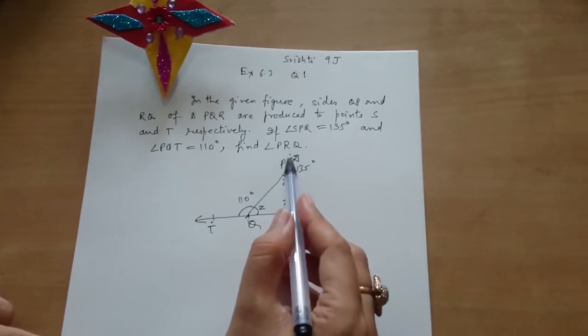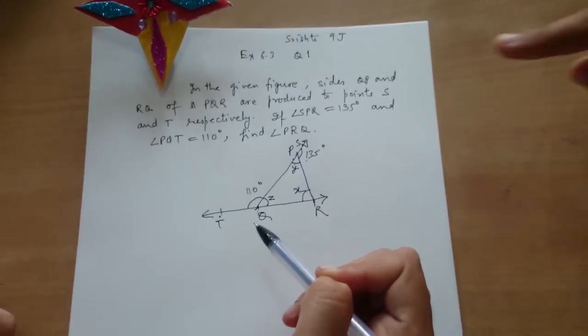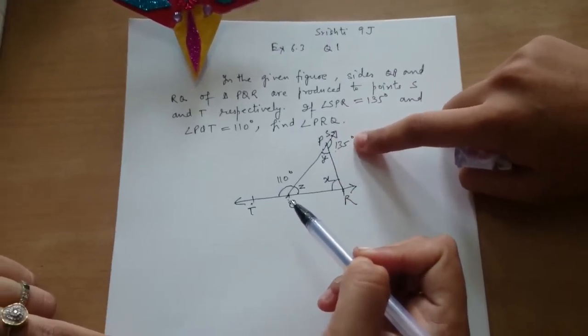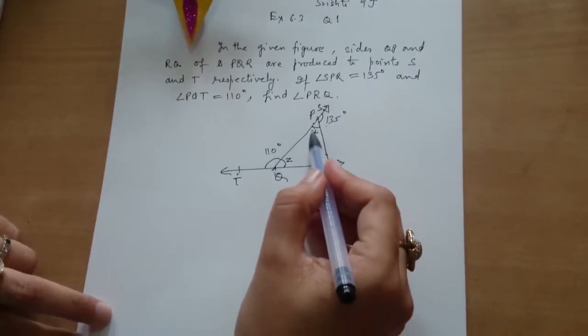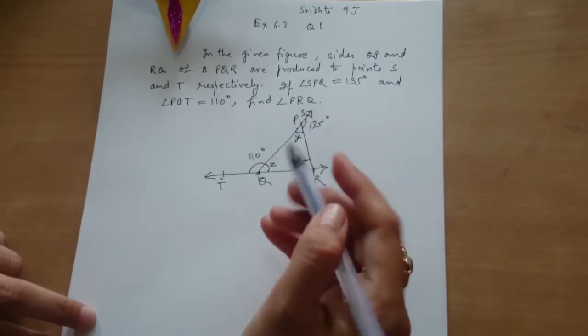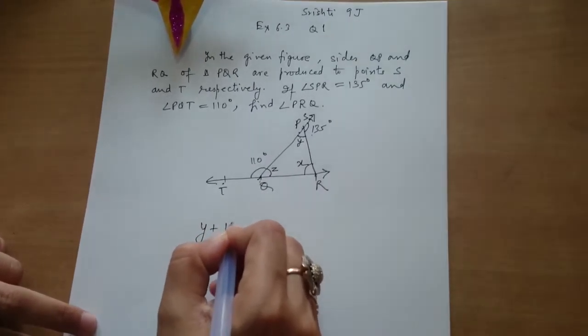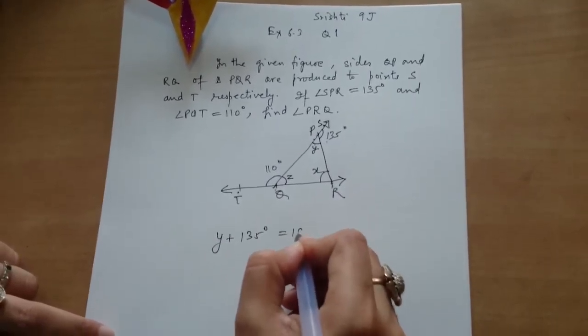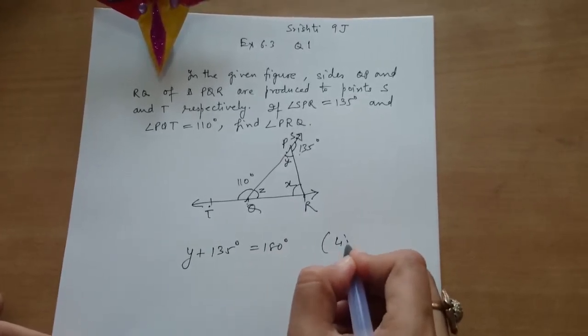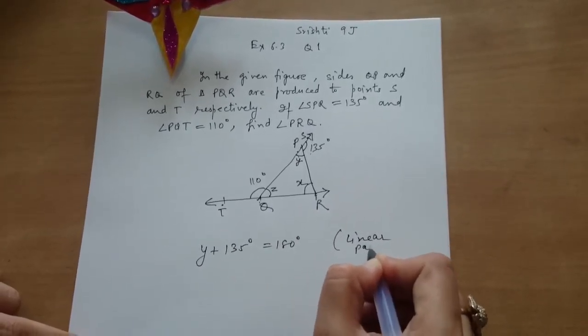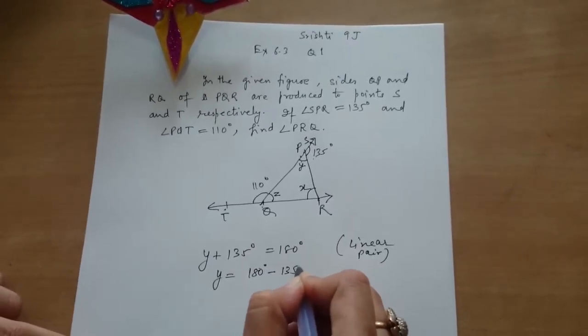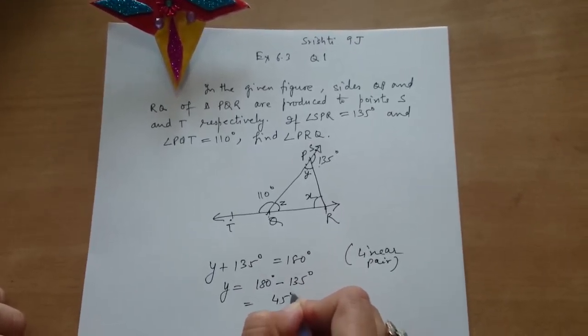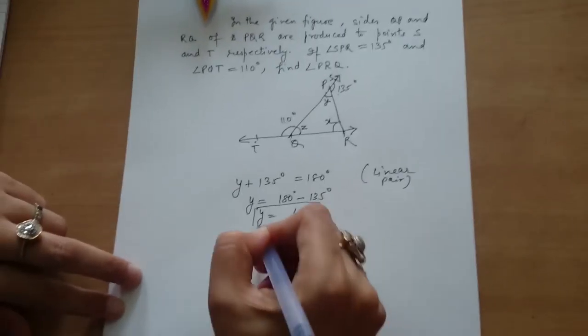Ma'am, we are given that angle SPR is 135 degrees. Right. And SQ is a straight line. So Y plus 135 equals 180 degrees. Right. So Y plus 135 degrees equals 180 degrees. It is a linear pair. Very good. So Y equals 180 minus 135, which is 45 degrees. So we have found the value of Y.